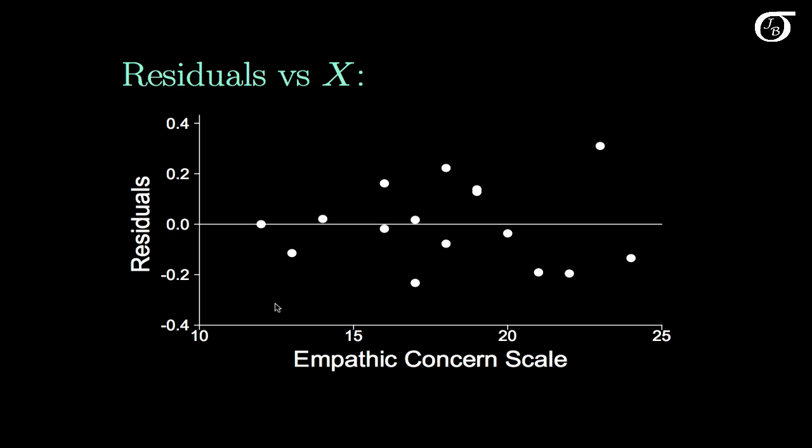One could make an argument, I suppose, that the variance of the residuals might seem to be a little bit lower here than over here. But that's not necessarily an obvious effect here, and I'm not going to consider that to be a big problem. So I'm going to give this the check mark that that's a reasonable residual plot.